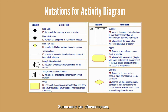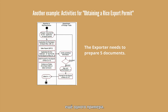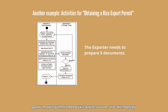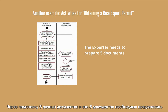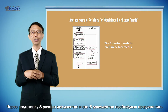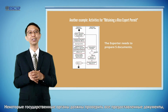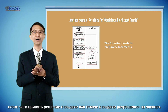So with these notations in mind, please see the following activity diagram as another example. This activity diagram shows the sequence of activities for obtaining a rice export permit use case. This diagram clearly illustrates that the exporter needs to prepare five different documents for the application of an export permit, which are then submitted to the Department of Foreign Trade, where government officials verify all submitted documents and decide whether to issue an export permit or not.